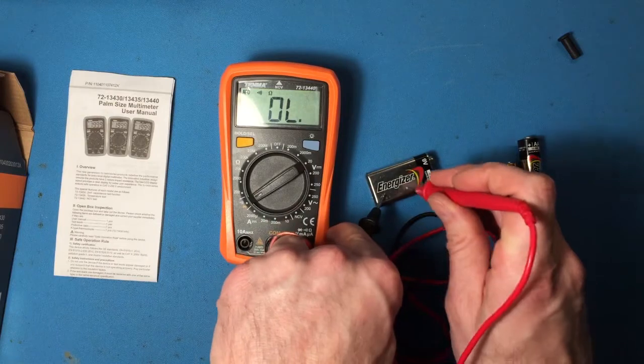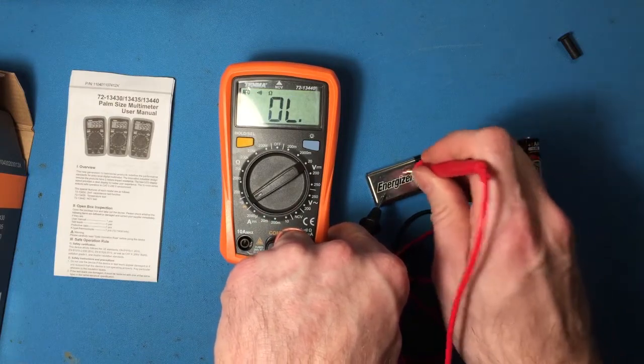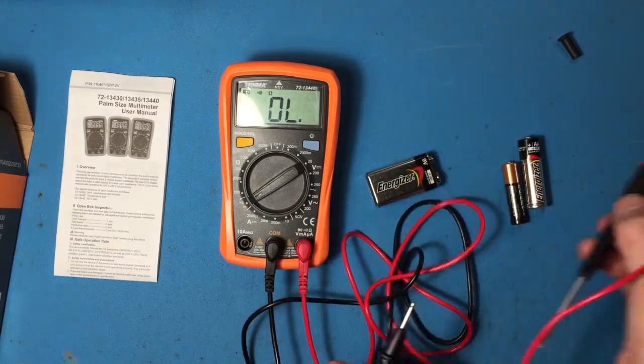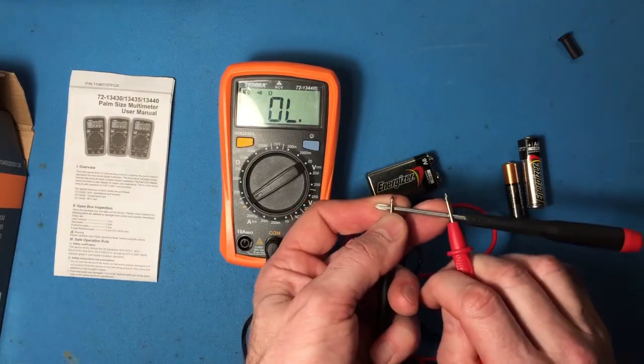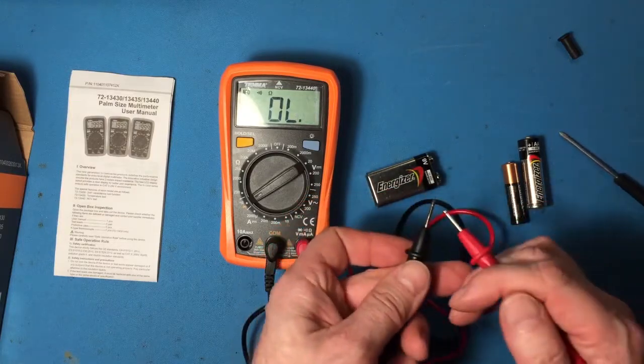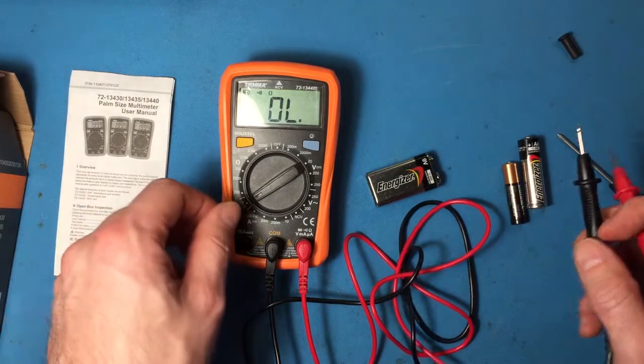I could use my 9-volt as an example. If I dig the leads into the 9-volt, it says there's continuity between the metal. Does that make sense? Or say my screwdriver right here, same thing. So that's a good, useful measurement.